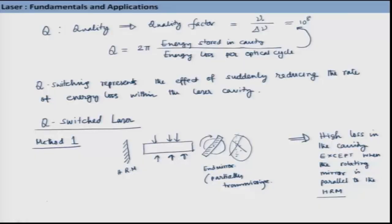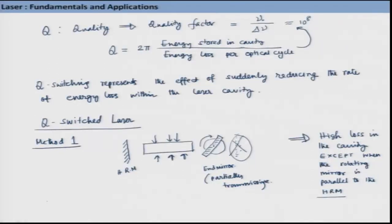The switching mechanism — be it a rotating mirror or something else — whichever switches the quality of the cavity, this switching rate has to be short enough. The time period when the cavity round trip is allowed has to be very short so that we can get a short pulse. The pulse repetition rate will be totally dependent on the cavity length.